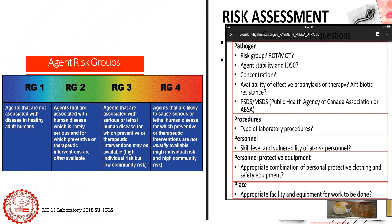Our infectious pathogens are classified into agent risk groups. RG1 are agents that do not cause disease to healthy adult humans. RG2 are agents that may cause disease to humans but not serious and can be prevented by therapeutic interventions. RG3 are agents that can cause serious or lethal disease to humans with available therapeutic intervention. RG4 are agents likely to cause serious or lethal human disease for which therapeutic interventions are not available most of the time.